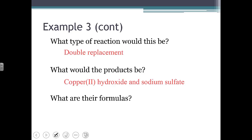Now it's just a matter of figuring out their formulas. I still have Cu²⁺, but it's now with OH⁻, which means I'm going to need two of those OH minuses. So Cu(OH)₂ is our formula for copper(II) hydroxide. And sodium sulfate, Na⁺ with SO₄²⁻, I'm going to need two sodium ions. So our formula would be Na₂SO₄.